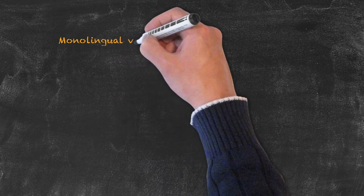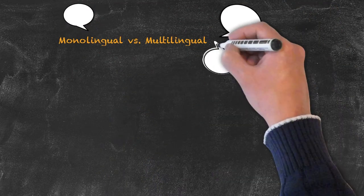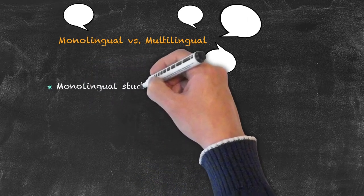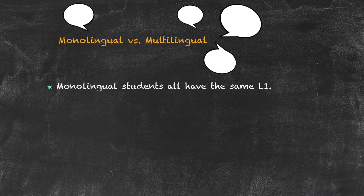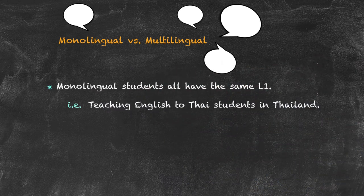Our final grouping that we're going to look at is the differences between teaching monolingual and multilingual classes. Firstly, we should define what we mean by these two things. Monolingual students are a group of students that all have the same native language, and typically that's taught in the country. An example of that could be the teaching of English to Thai students in Thailand. The vast majority of your class will all speak Thai, so they all have the same L1.